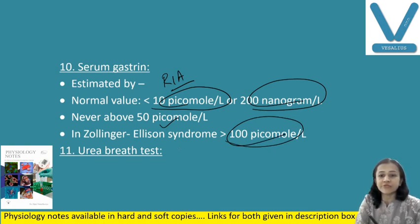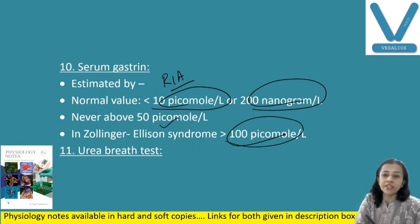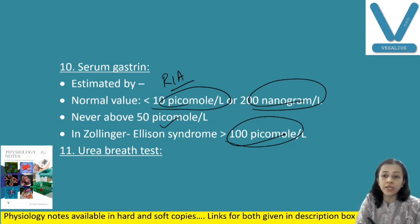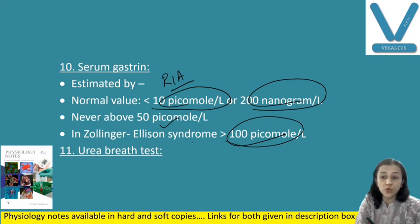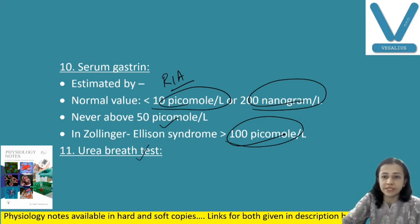Another is the urea breath test. Gastric ulcer — as we have discussed, peptic ulcer's common cause is Helicobacter pylori infection. When Helicobacter pylori infects, this bacteria produces ammonia in the presence of urea, and urea comes out — that is the basis of the urea breath test.